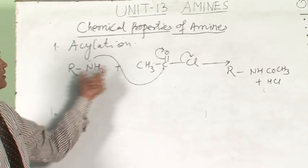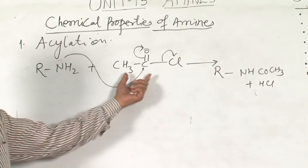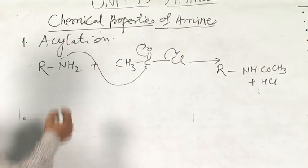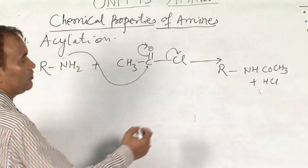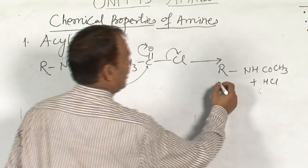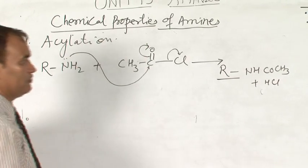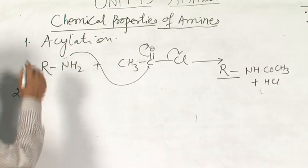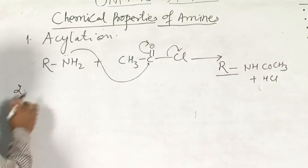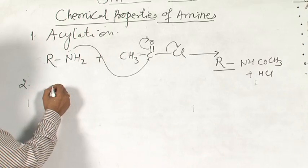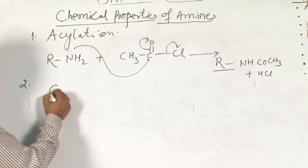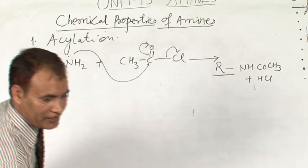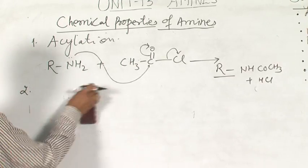Acylation: the reaction of amine with acyl halide. Acyl chloride reacts with amine to give an amide. This reaction is common for both aliphatic and aromatic amines.